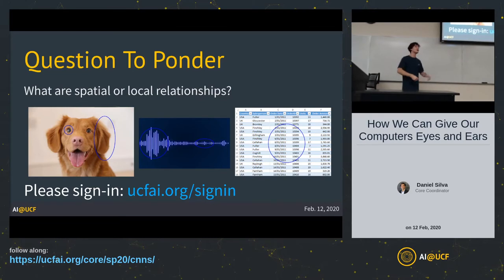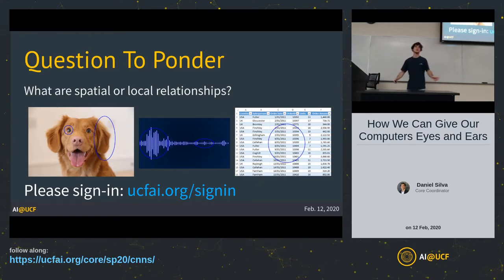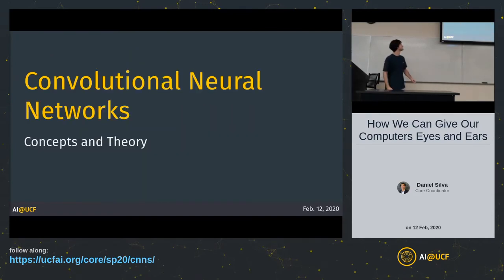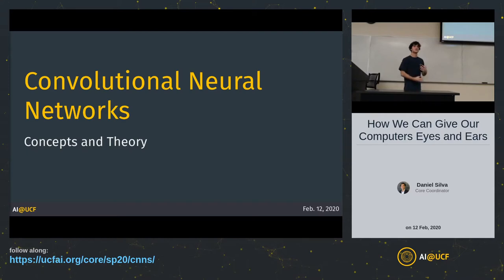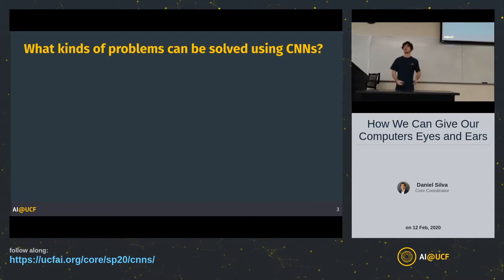So we understand the difference between unstructured and structured data, and the difference between a global and a local correlation. How do we extract these local or spatial correlations behind data? The answer is convolutional neural networks. We're going to unpack how this subset of neural networks works to extract features from data and ultimately classify or perform some prediction task.